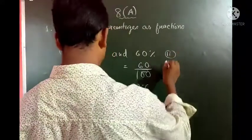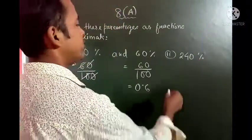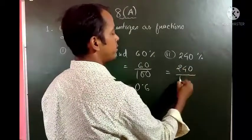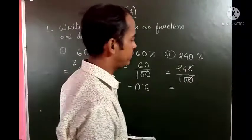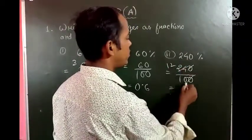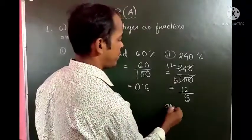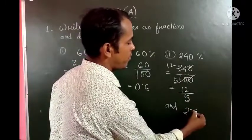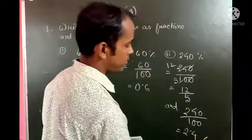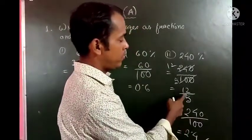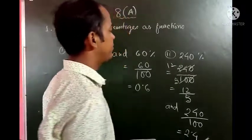Question number 2: 24%. So we write 24 divided by 100 and remove the percentage sign, then write in simplest form. Simplifying: 2 divides both, giving 12 by 50, then again 12 by 50 simplifies to 12 by 50. So 12 by 5 is the fractional form. The decimal form is 24 divided by 100 equals 2.4. Or you can find it by dividing 12 by 5 to get 2.4.